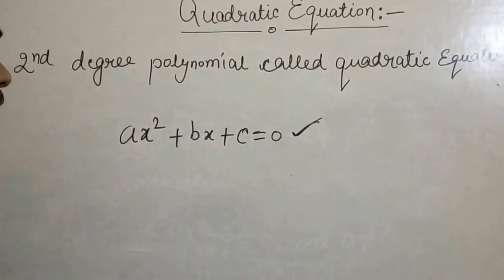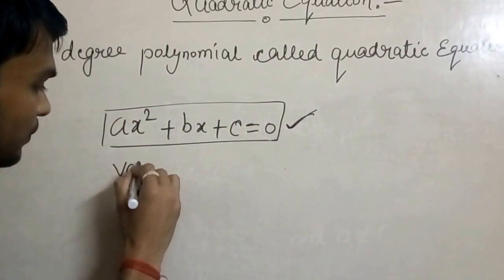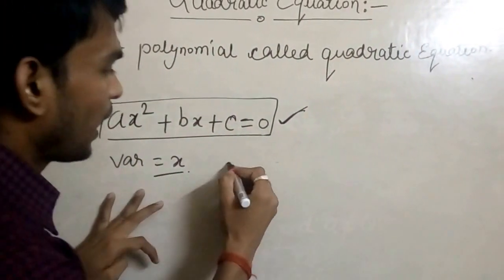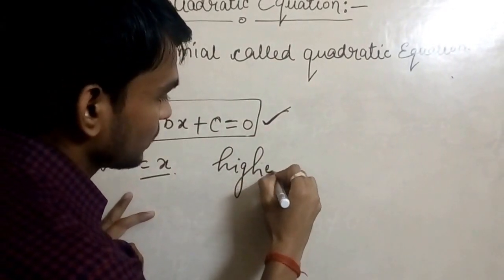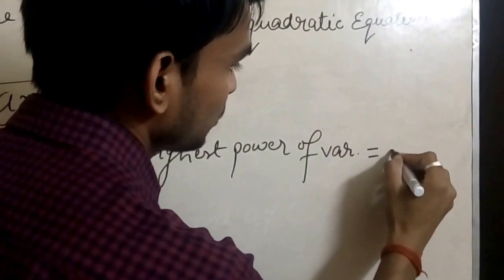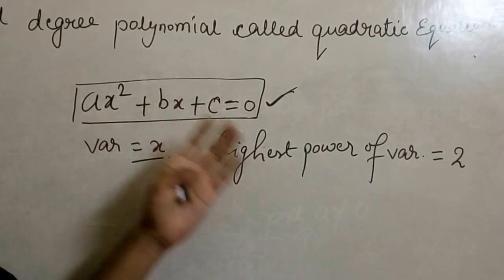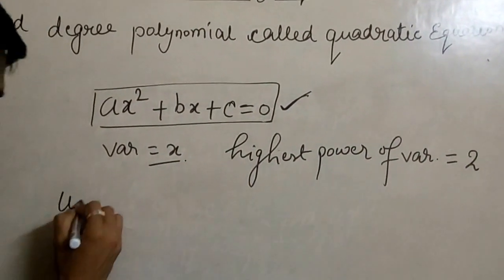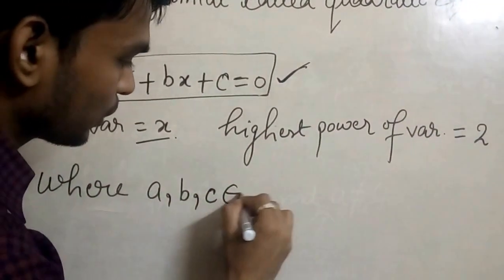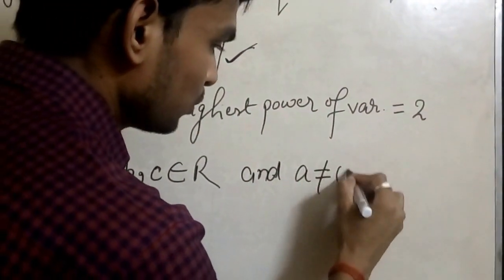Why is this a quadratic equation? Because in this equation, the variable is x, and this equation has the highest power of the variable equal to 2. So this is a quadratic equation — a second degree polynomial — where a, b, c belong to the real numbers and a is not equal to 0.